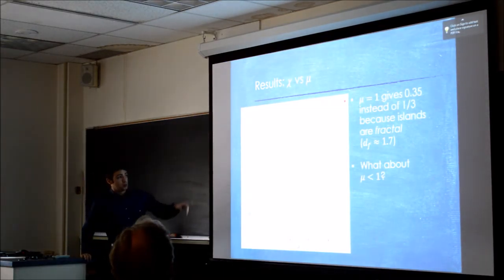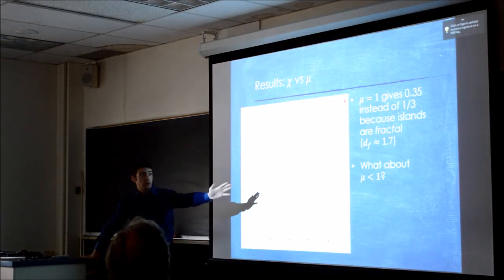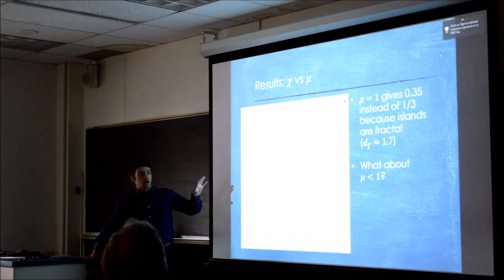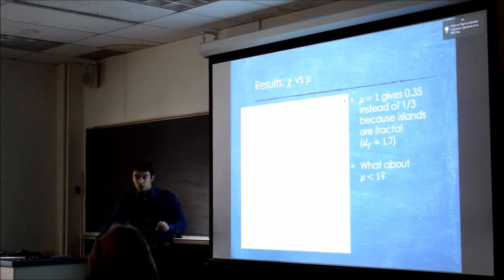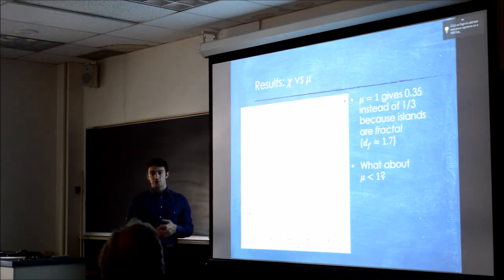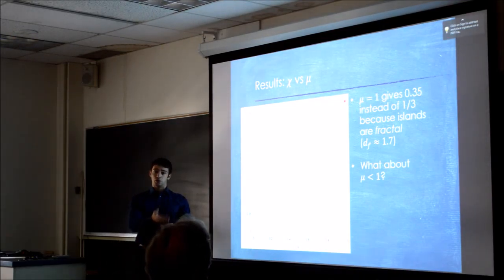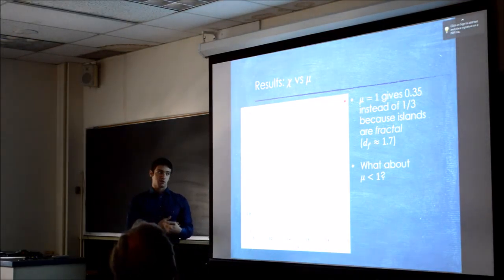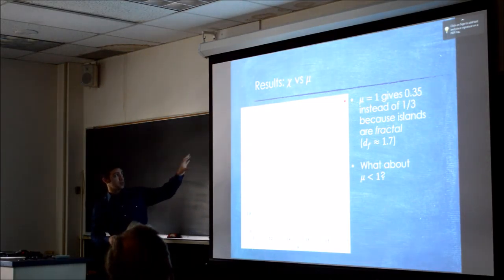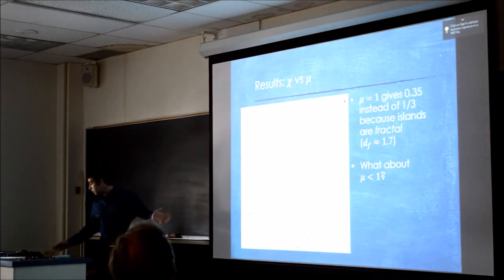So to start with, just one point, mu equals one. This is the normal diffusion case. One thing to note is that it gives 0.35 instead of one-third. This is because when you do these random walks on a square lattice, the islands that are formed are actually fractals. They're not perfectly filled in two-dimensional islands. So the theory has to be adjusted a little bit to account for these fractal islands. This is stuff that is known from previous work and stuff that has been measured in previous work. This is just a correction to be clear about what's going on.